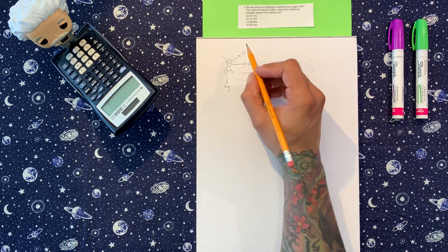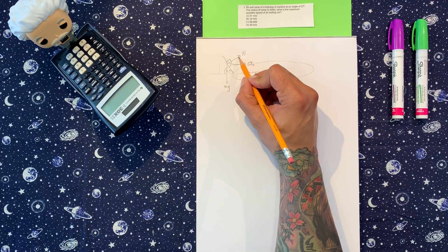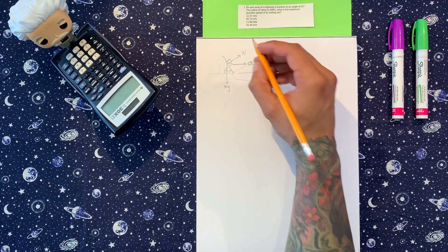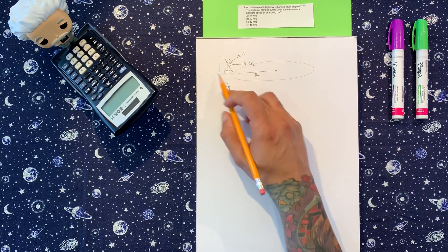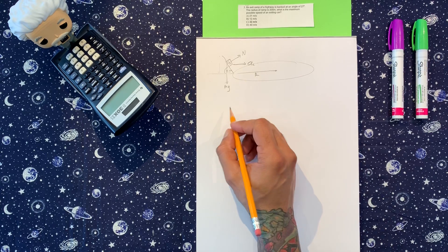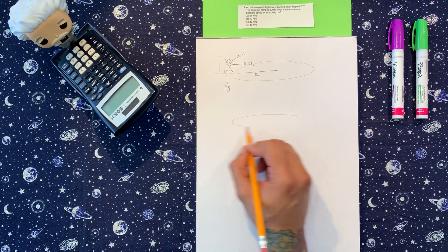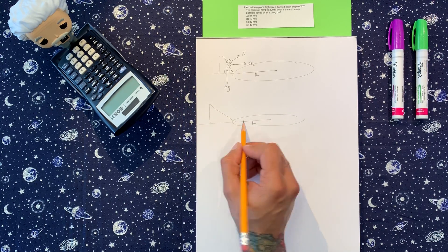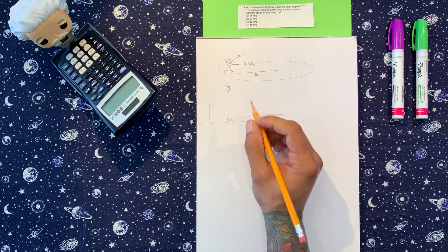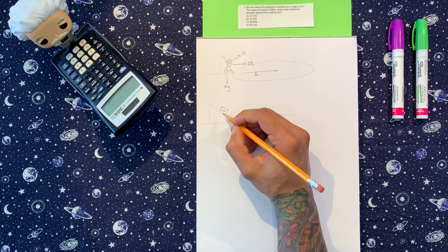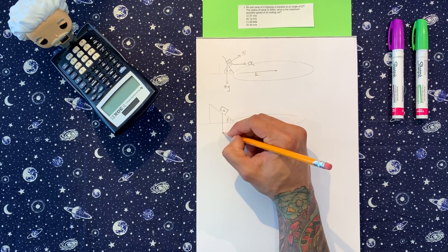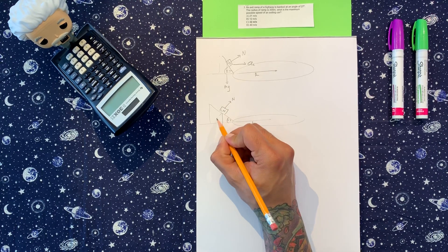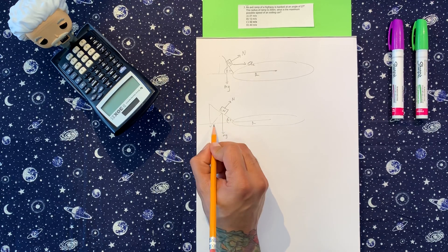What I want to do is break up this normal force into x and y coordinates. This angle is 27 degrees. We have the car here. When I bring MG down, remember, this angle in here, I bring this back down this way. And just like this, this angle in here is the same as 27. If I extend this line up and know some trig, this angle and this angle are the same thing.